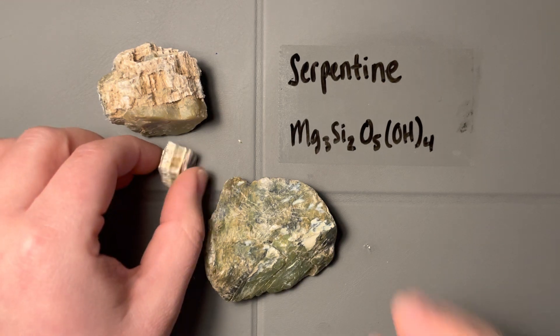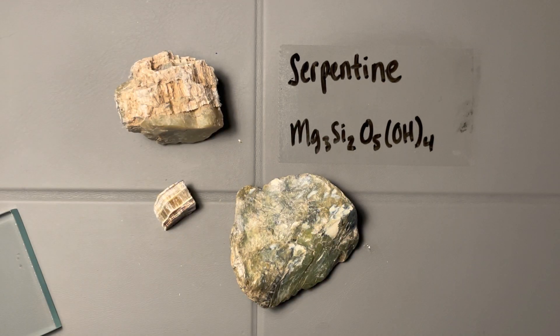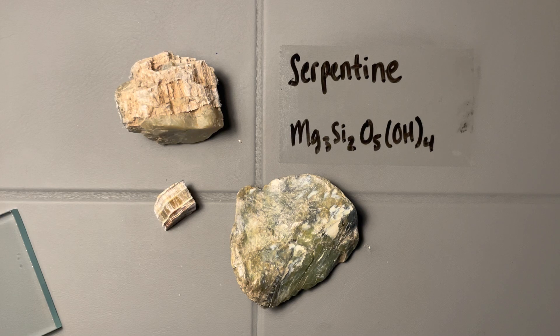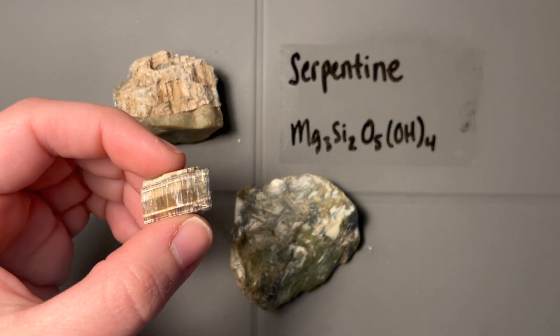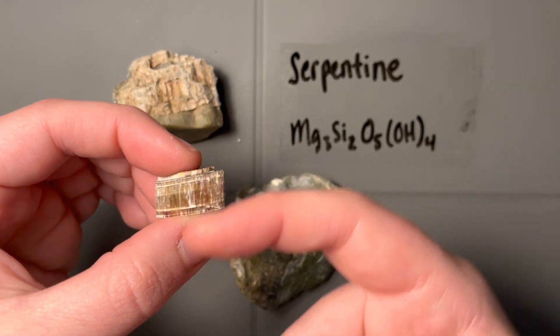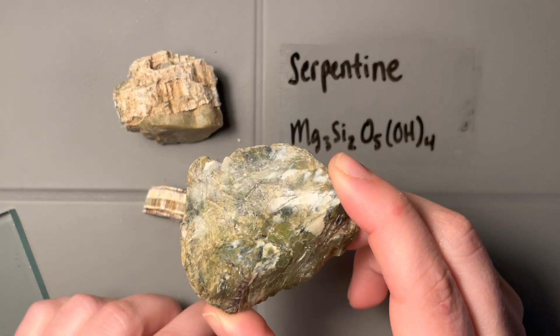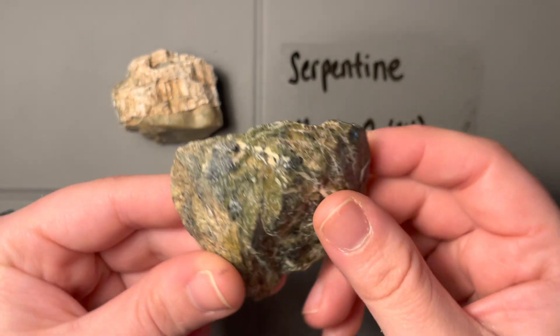They should all be harder than a penny though. Let's see what else we have. Cleavage is also difficult to tell, because our cleavage planes in this—since it's a fibrous mineral—we would expect it to go along the fibers. But with this one, cleavage is just—I can't see anything.